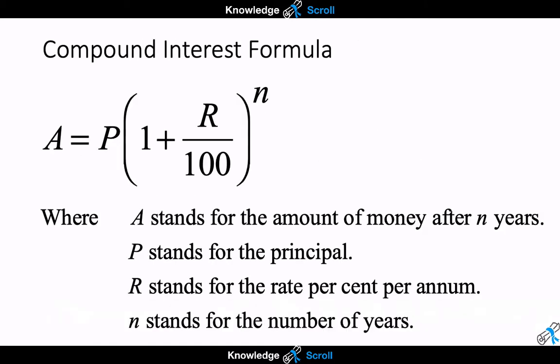This may be the first time you've seen this formula, so I'm going to explain what each term means. A stands for the amount of money that you earn after a certain number of years. P stands for the principal. R stands for the rate percent per annum, meaning per year. And N stands for the number of years.